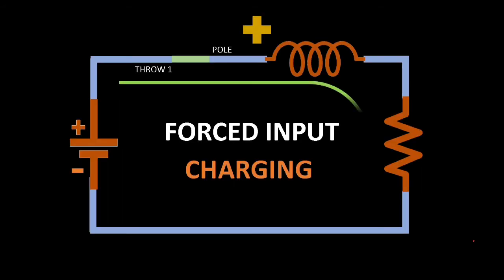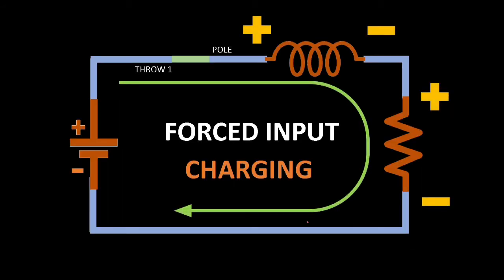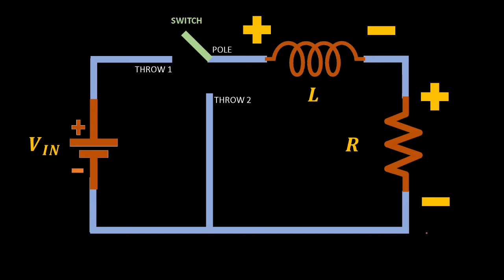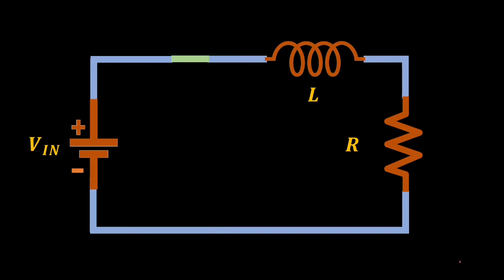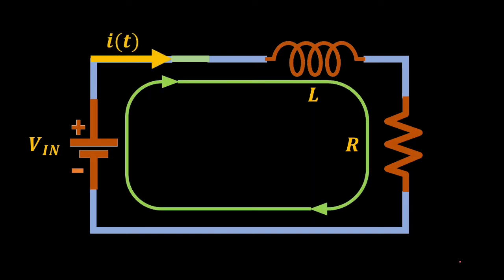Let's start with the forced input. Let's assume that at time less than 0, the RL circuit is not yet connected. But at time equal to 0, where we turn on the switch, we will assume an initial condition that the current in the circuit is equivalent to I0. To proceed, we will do the KVL. With a given current direction and polarity of each element, we will use the entry point to determine the voltage polarity across each element.